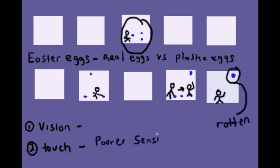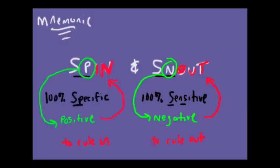A common analogy to this example would be blood transfusions. If each room represented a unit of blood from a random donor, then each rotten egg could represent an HIV virus. Here we would want to use the most sensitive test possible in order to rule out HIV in all the bags that test negative. The downside is that some bags may test falsely positive and we may end up throwing away perfectly normal blood.